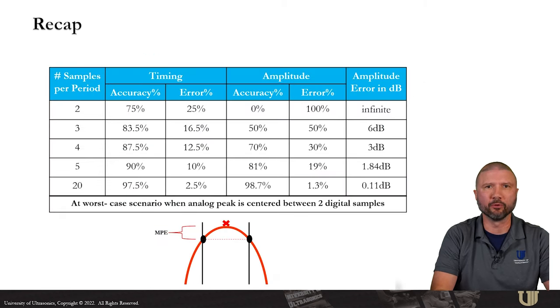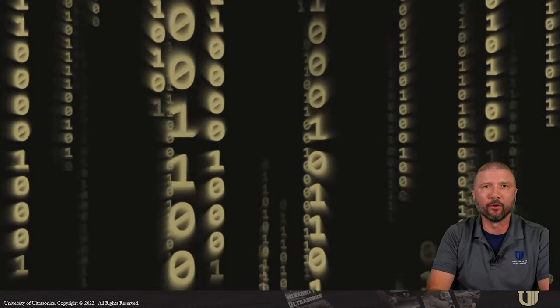So just to recap what we observed. The more samples per period we get, the greater our timing and amplitude accuracies are going to be, and the less error we'll have. But that increased accuracy or fidelity comes at a cost. The more samples you collect, the bigger your file size will get if you're saving data. And that also comes with slower acquisition or scanning rates. In an upcoming video, we'll deal with data compression as a way of overcoming file size and scanning rate restrictions. But for now, we'll just leave it there.